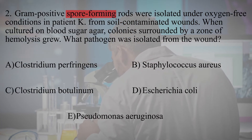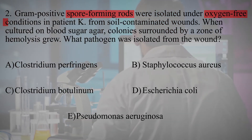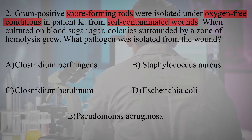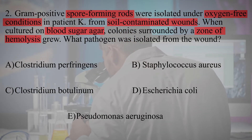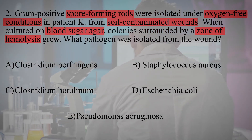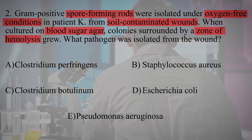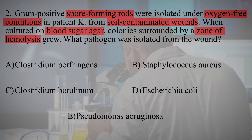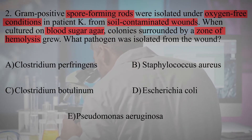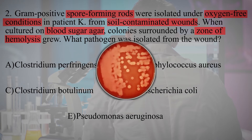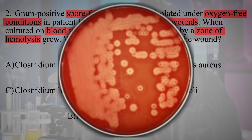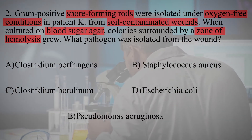Gram-positive spore-forming rods were isolated under oxygen-free conditions from soil-contaminated wounds. When cultured on blood sugar agar, colonies surrounded by a zone of hemolysis grew. The keywords are spore-forming rods and oxygen-free conditions, which immediately point to the genus Clostridium — obligate anaerobes. The wound was contaminated with soil, and the pathogen formed a hemolysis zone on blood agar. Among anaerobic bacteria, the causative agent of gas gangrene has this ability. Therefore, the correct answer is Clostridium perfringens.